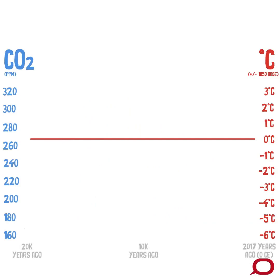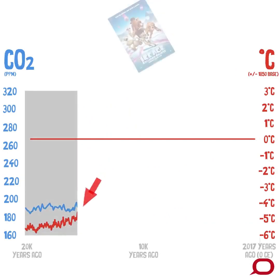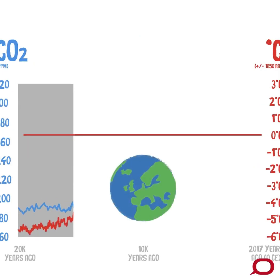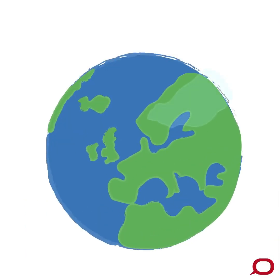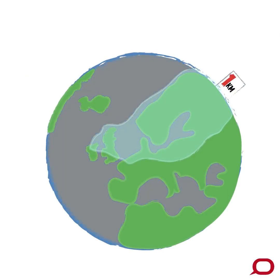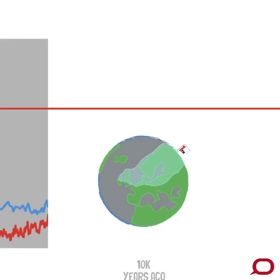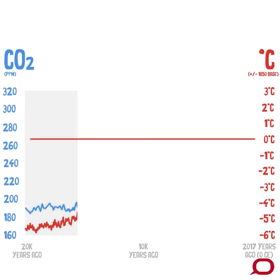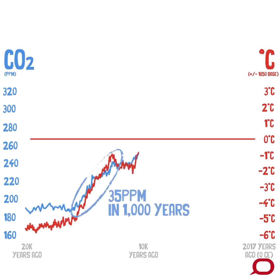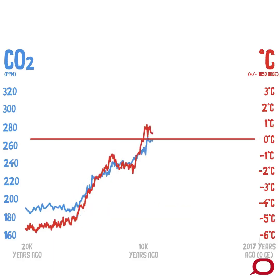At about 20,000 years ago, we have the last ice age. At that time, kilometer-thick ice sheets spread across Europe and North America, eating up water and driving sea levels down to 130 meters lower than where we are today. From that low, cold point, the CO2 rises naturally by as much as 35 parts per million each 1,000 years, stabilizing to near-modern levels at around 10,000 years ago.